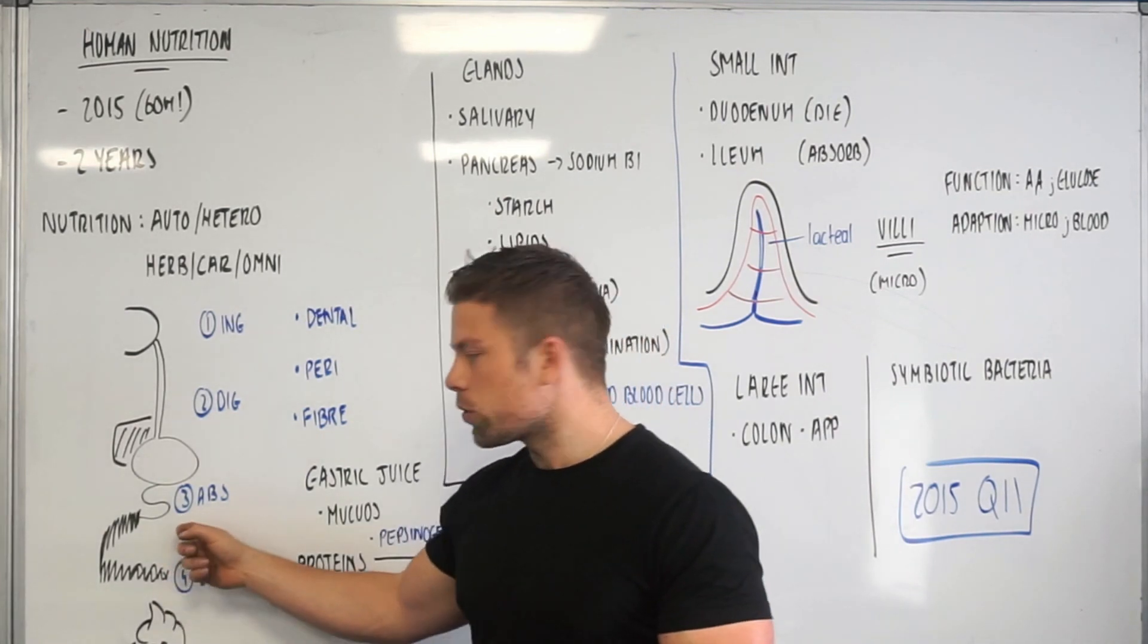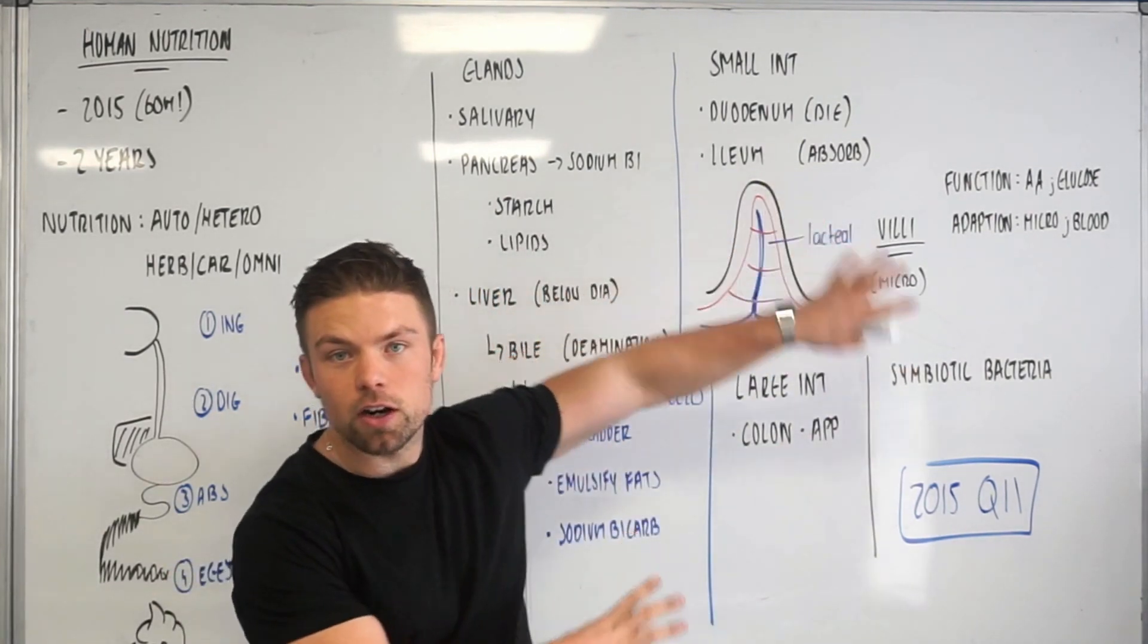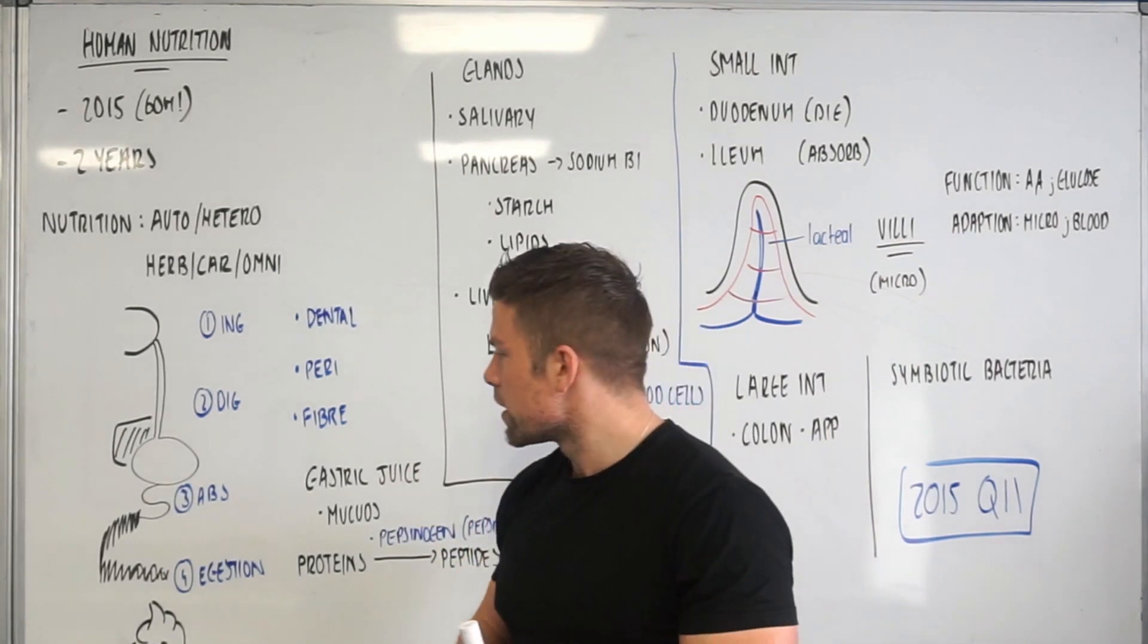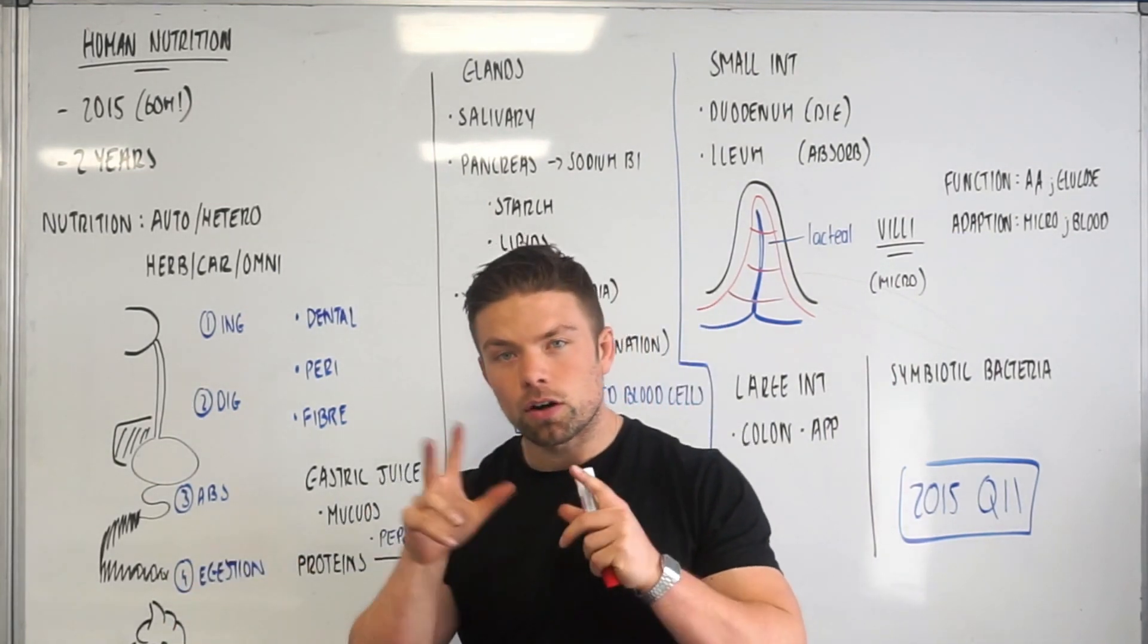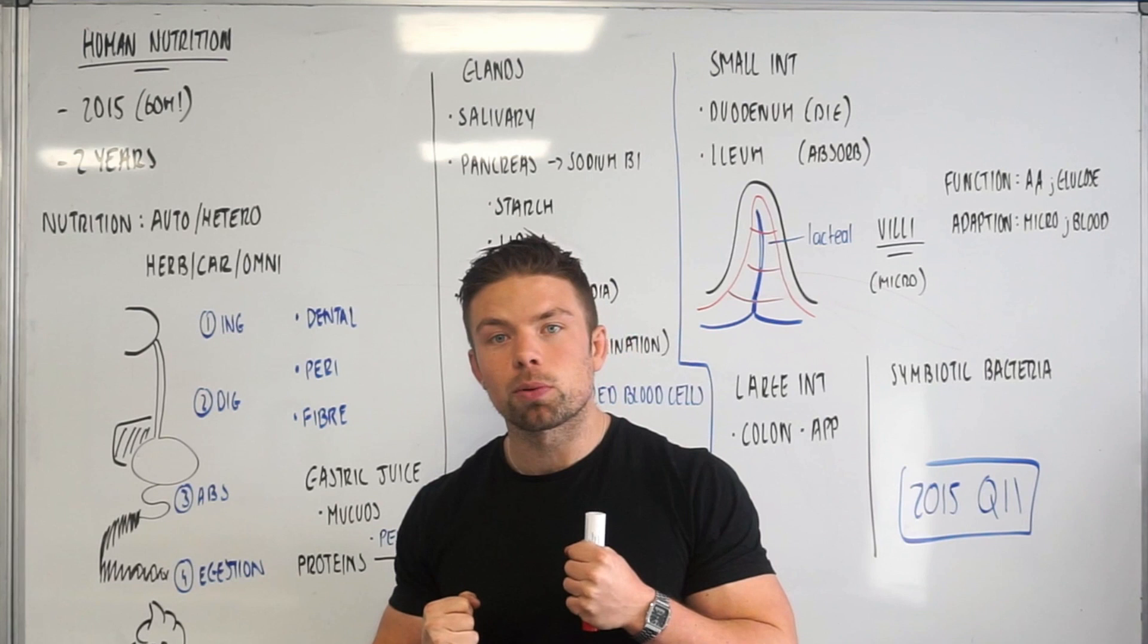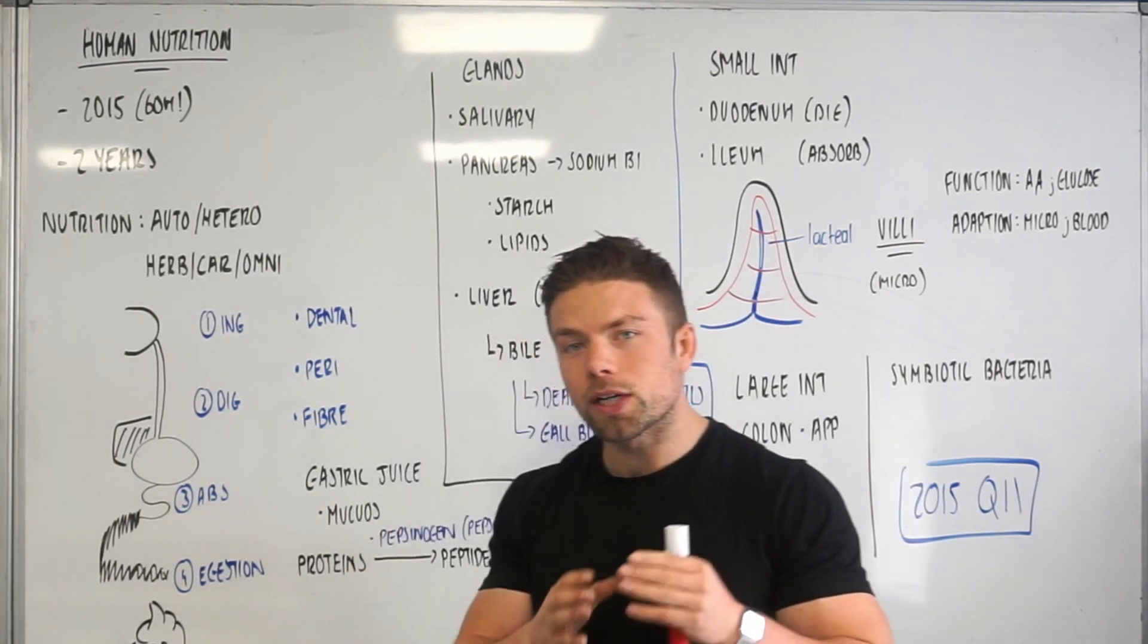It then goes into our small intestine, which we'll talk about more over here, but inside our small intestine that's where food begins to, our third process, be absorbed into our bloodstream. So our food is broken down into our biomolecules etc and it's absorbed into the bloodstream there.